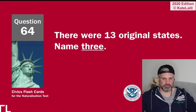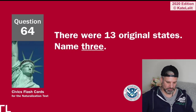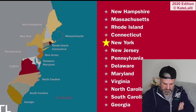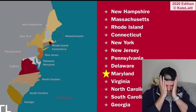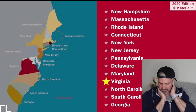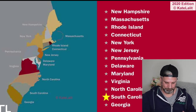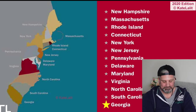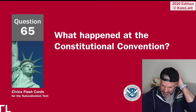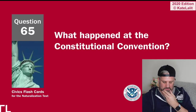There were 13 original states — name three. New York, Maine, California. New Hampshire, Massachusetts, Rhode Island, Connecticut, New York, New Jersey, Pennsylvania, Delaware, Maryland — I was all confident then — Virginia, North Carolina, South Carolina, Georgia. Sorry Americans, I mean no disrespect.